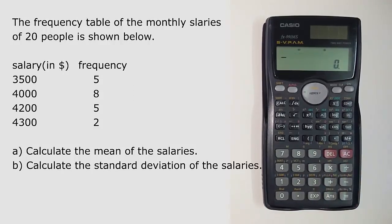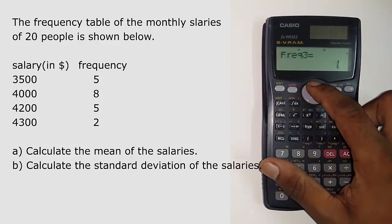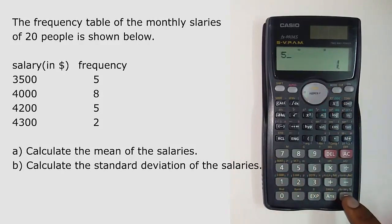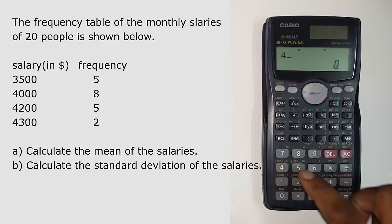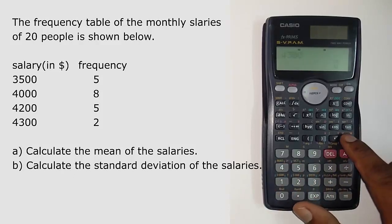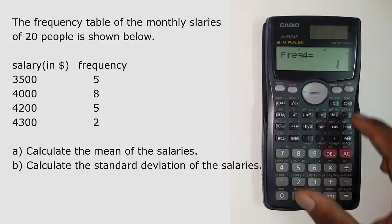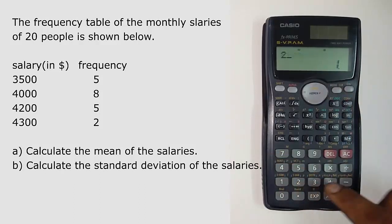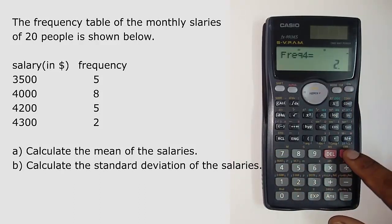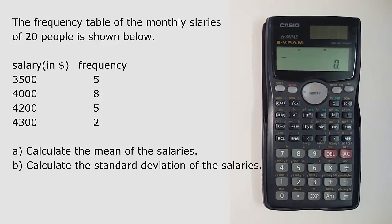Now we will quickly add up other entries. Value 4200, its corresponding frequency is 5. Value 4300, its corresponding frequency is 2. Okay so all set here.